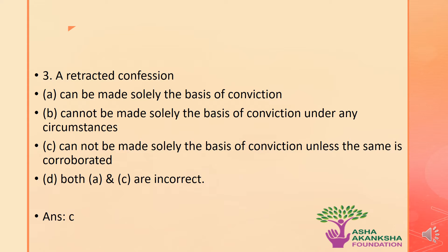The next question is: a retracted confession is what? The options are: a) can be made solely on the basis of conviction, b) cannot be made solely on the basis of conviction under any circumstances, c) cannot be made solely on the basis of conviction unless the same is corroborated, or d) both a and c are incorrect. The correct answer is option c — a retracted confession cannot be made solely on the basis of conviction unless the same is corroborated.